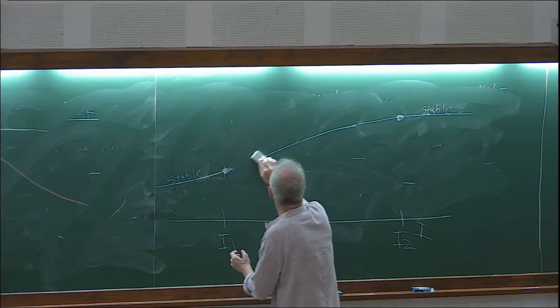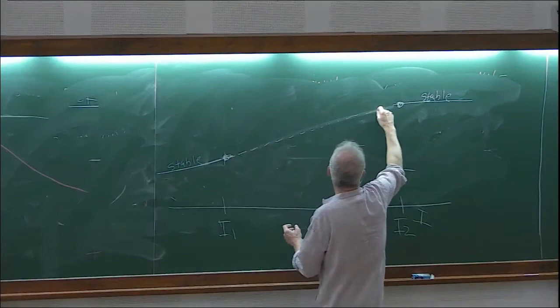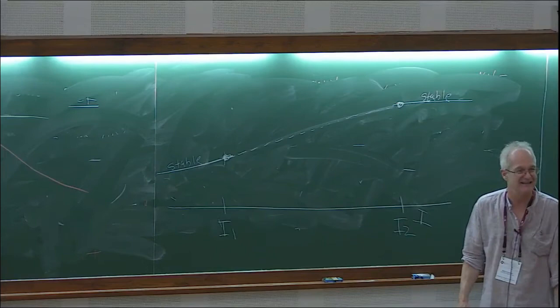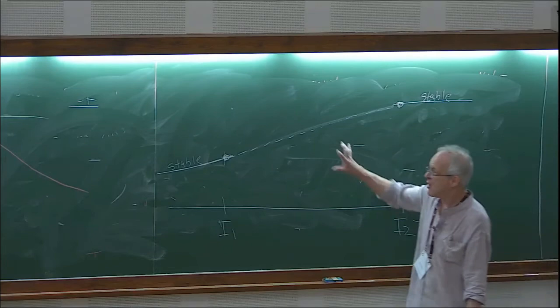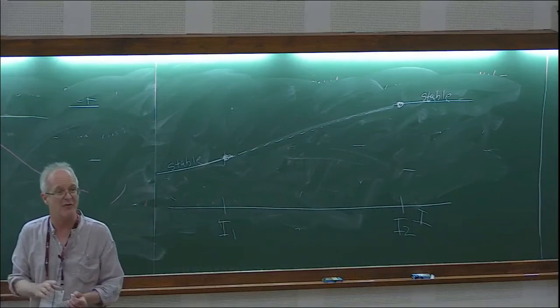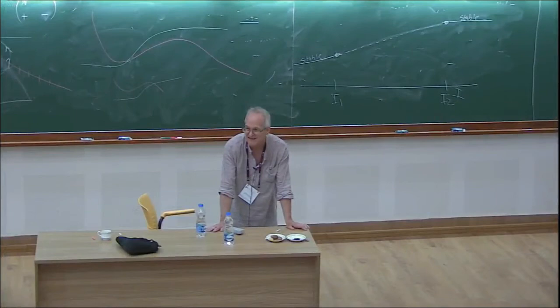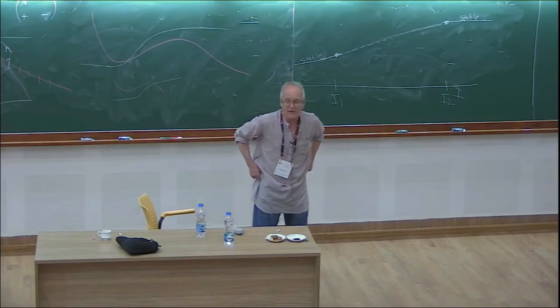What happens when we have no stable equilibrium? We have another theorem. First, a really cool theorem that's really hard to prove — the Jordan curve theorem, which says every closed simple curve in the plane divides the plane into an inside and an outside.